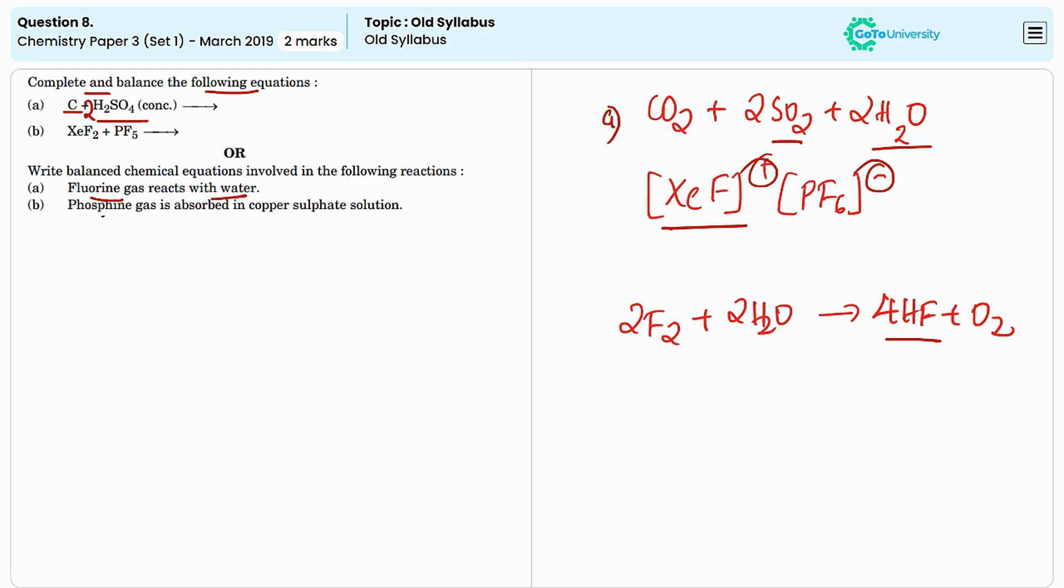The second reaction is phosphine gas absorbed in copper sulfate solution. When phosphine reacts with copper sulfate, they produce Cu3P2 and 3 moles of sulfuric acid.